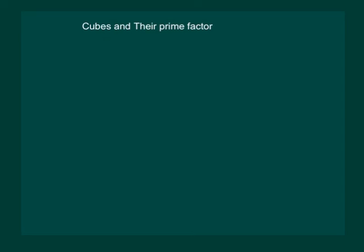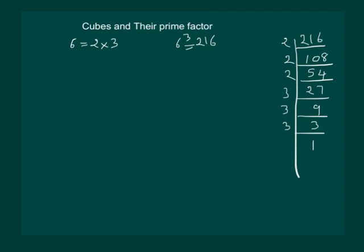Let us do the same exercise for 6. Prime factors of 6 are 2 into 3. We know that 6 cube is 216. Let us find prime factors of 216. On prime factorization, 216 is equal to 2 into 2 into 2 into 3 into 3 into 3.